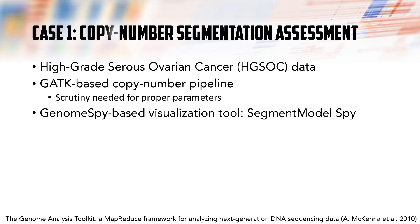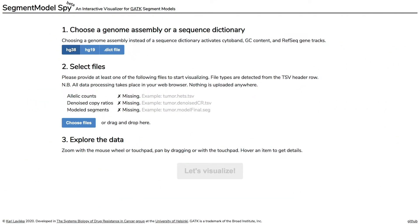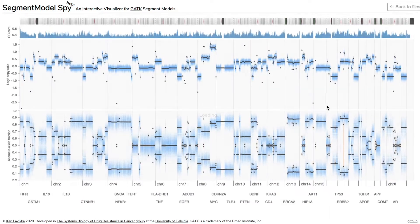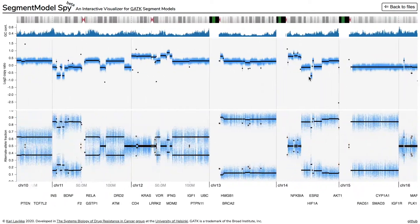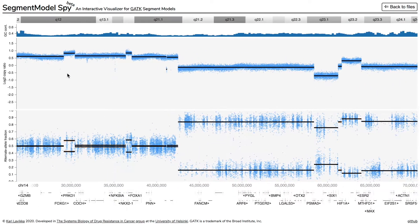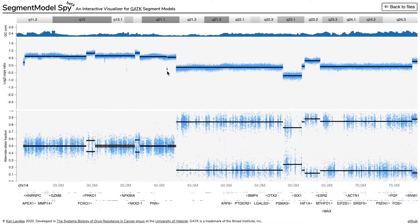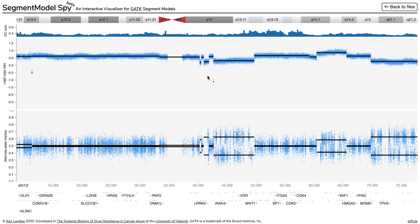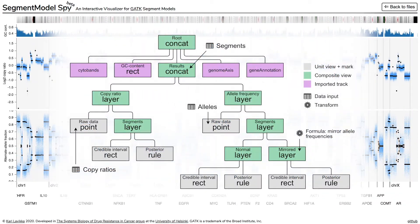Now I show an example of a concrete application that employs the grammar. High-grade serous ovarian cancer is largely copy number driven — parts of the genome are repeated and some have been lost. Identification of aberrant regions from next-generation sequencing data can be accomplished using the genome analysis toolkit. To allow for better scrutiny of the results, I created a Genome Spy-based visualization tool. This dataset consists of about 4 million raw data points shown in blue, along with the modeled segments as black lines. The user can see a genome-wide overview and zoom into details to see the breakpoints more clearly. Continuous zooming and panning allows the user to scan the results swiftly. Thanks to the GPU, the interactions are fast and smooth. The grammar allows for specifying a complex view hierarchy involving concatenation and layering.